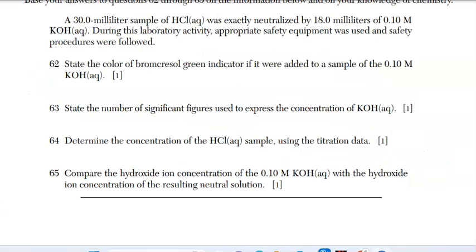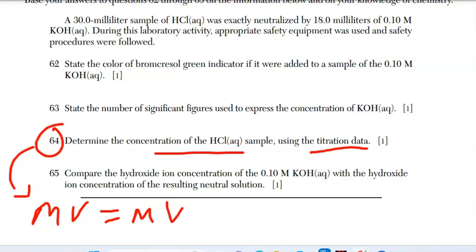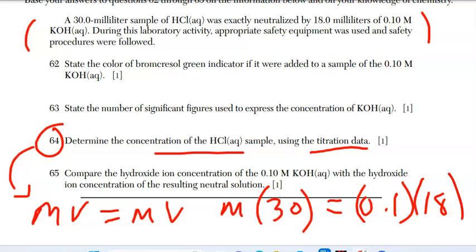We're at 64. We're asked to determine the concentration of HCl using the titration data. Well, the equation that we're dealing with here is on reference table T. And it's the molarity times the volume of the acid is equal to molarity times the volume of the base. We're looking for concentration. If we go back here and look at the reading passage, I don't know what the molarity of the acid is. But I know my volume is 30 milliliters. The base is the KOH. And it's 0.1 for the concentration and 18 milliliters for the volume.